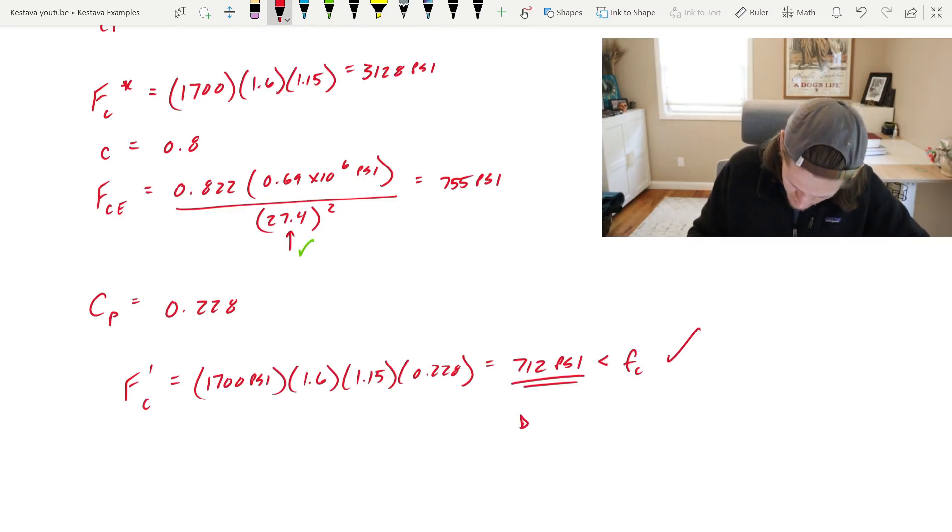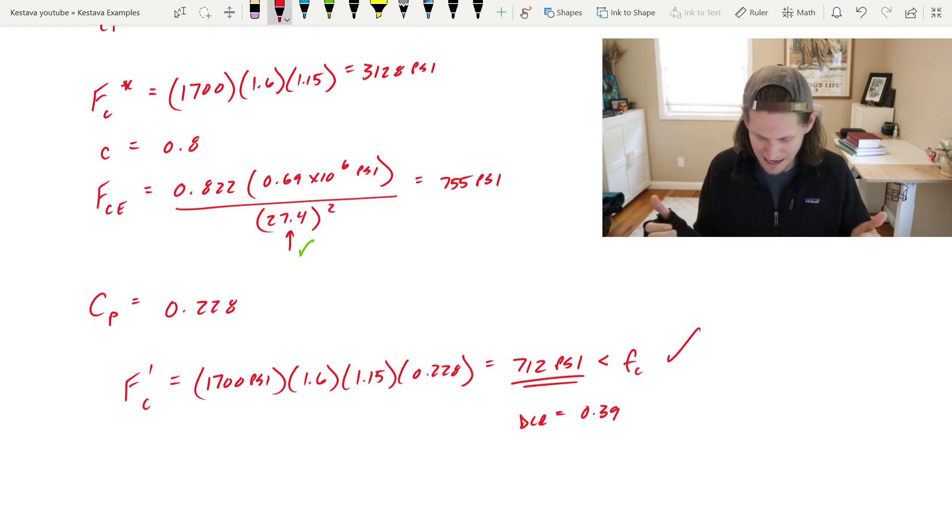That gives us the drum roll of FC prime equal to 712 PSI. So we are good there with a DCR equal to 0.39. We are sitting pretty. We're looking good. I like it.